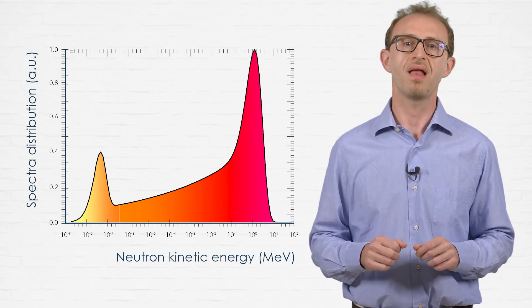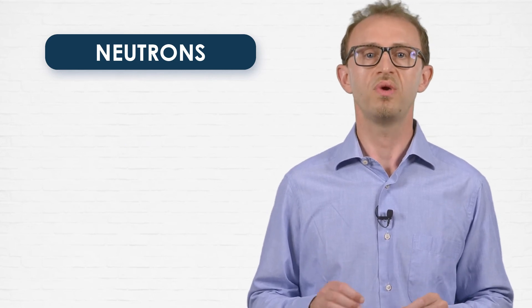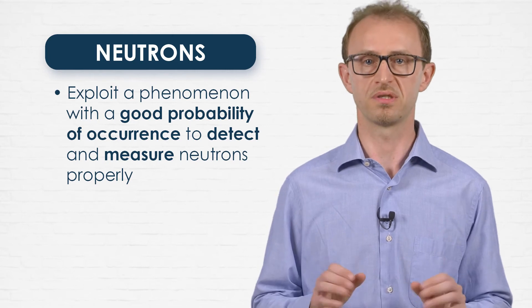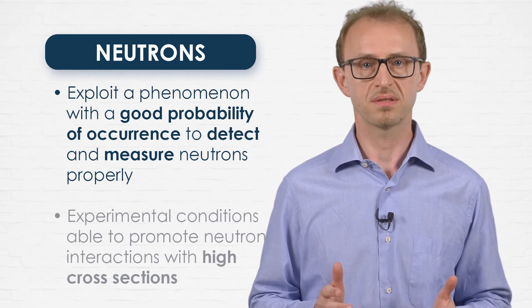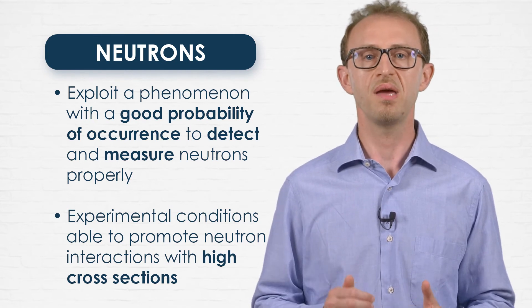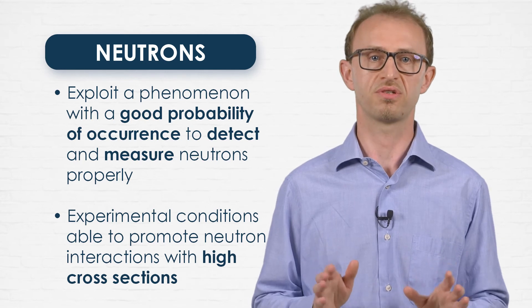Let's give you some elements about that. First of all, a simple consideration. In order to detect and measure neutrons properly, we need to exploit a phenomenon with a good probability of occurrence. In other words, we have to set up experimental conditions able to promote neutron interactions with high cross-sections.